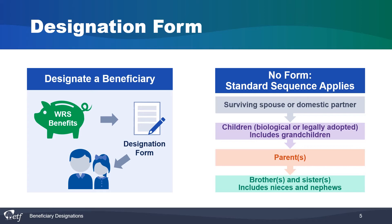Standard sequence is the order that your money will be distributed according to Wisconsin law. Payment is made to the first living person or people in this graphic, moving down the line until one is found. The first person to receive your benefits would be your surviving spouse or domestic partner. If they die or don't exist, your children or grandchildren will receive equal shares, and so forth. If there are no survivors identified through standard sequence, any death benefits will be paid to your estate. If you do not want standard sequence to be followed, you must fill out a beneficiary designation form so that your WRS benefits will be distributed according to your instructions.